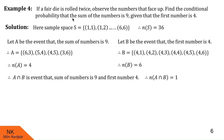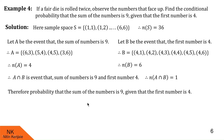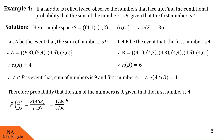Now let us find the conditional probability that the sum of the numbers is 9 given that the first number is 4, i.e., P of A given B. By the conditional probability formula, P of A given B equals P of A intersection B upon P of B. P of A intersection B is 1 by 36 and P of B is 6 by 36. After cancelling the 36s, we are left with 1 by 6. So the probability that the sum is 9 given the first number is 4 is 1 by 6.